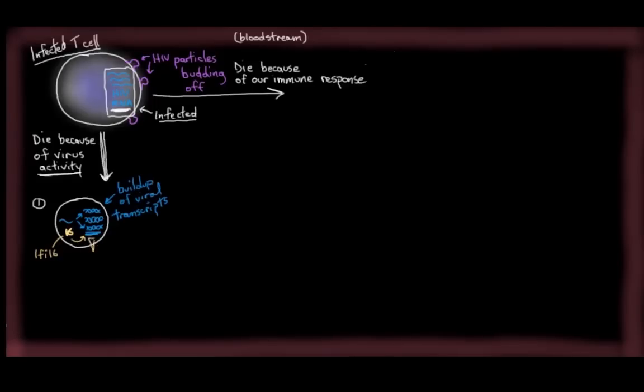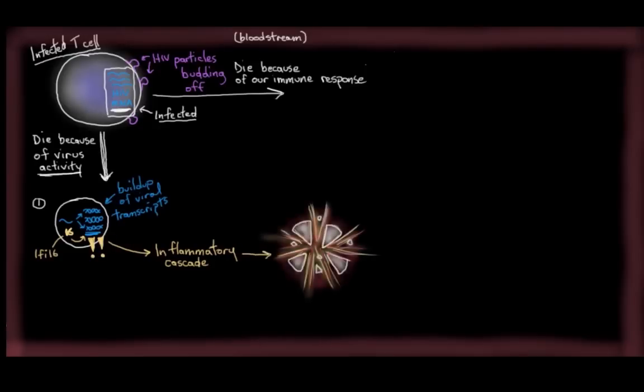So, if IFI-16 does take notice of all these viral transcripts building up, it activates an inflammatory cascade within the cell. And what ends up happening with this is the inflammatory cascade goes on to activate a self-destruct sequence within the cell, and we call this pyroptosis. Basically, the cell self-destructs because of a really, really inflammatory environment inside the cell, and that's called pyroptosis. And keep this in mind, because this pyroptosis mechanism gets really, really important later on in the video.